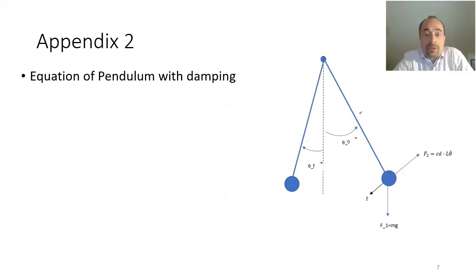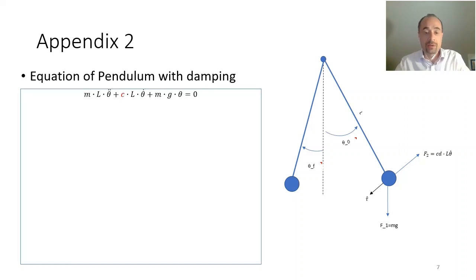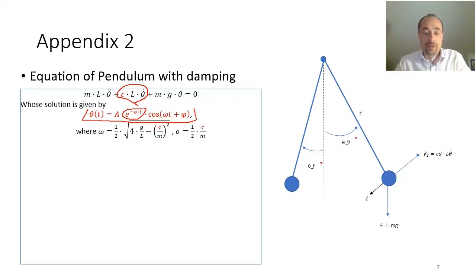The second appendix describes the pendulum with attenuation, where the equation is a little bit more complicated because it includes this factor which describes the damping. And the solution is given by this function, where beside the cosine function and the amplitude, we have this attenuation function. The frequency is given by this formula,